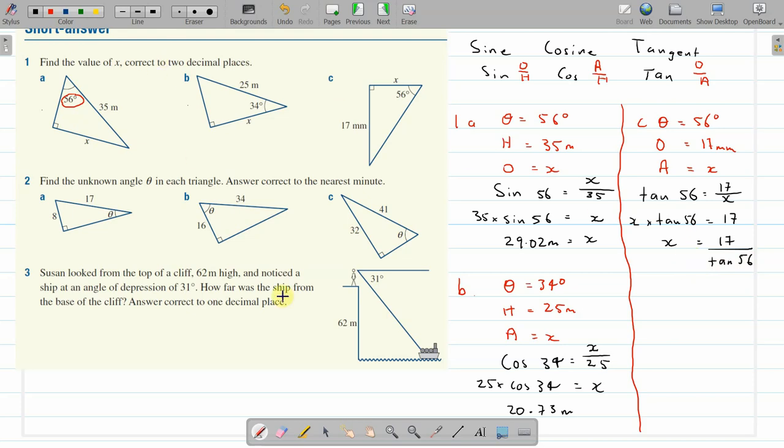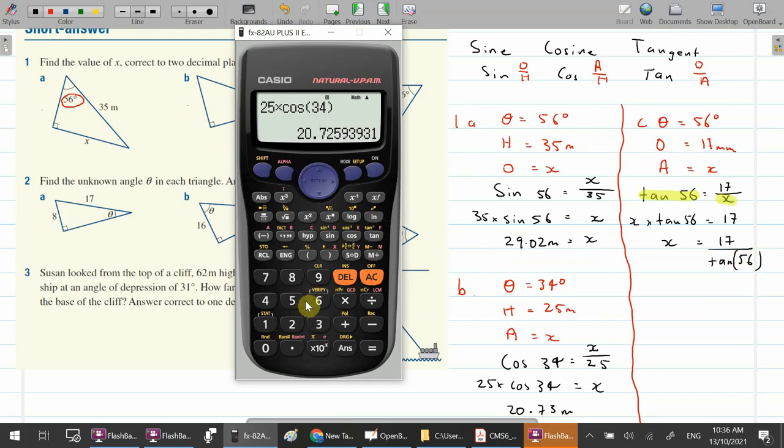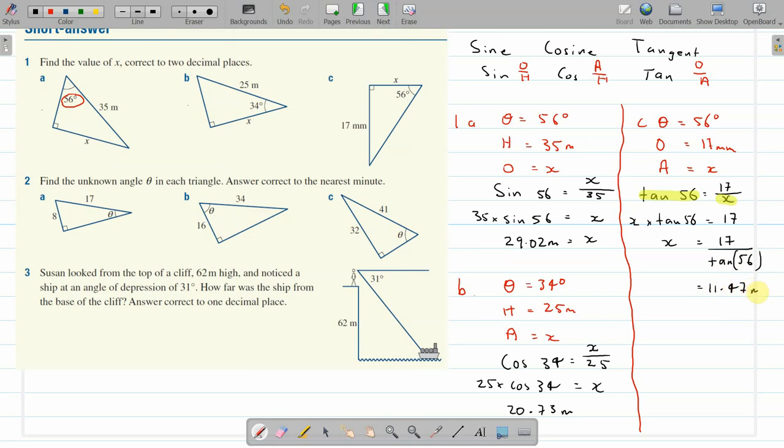In effect, what we've just done is swapped the x with the tan of 56. If you see this step down here, the x is now over here and the tan of 56 is down here. That's what happens when what you're looking for is at the bottom of the fraction. So that's the calculator step. And we've got to remember to put the brackets in. 17 over the tan of 56, close bracket. 11.47, and that's in millimeters.